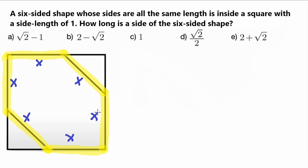All six sides share the same variable X because they are the same length as stated in the problem. The square on the outside has a side length of one — this whole side length is one, as is each of the other sides. So now we want to figure out the value of X.